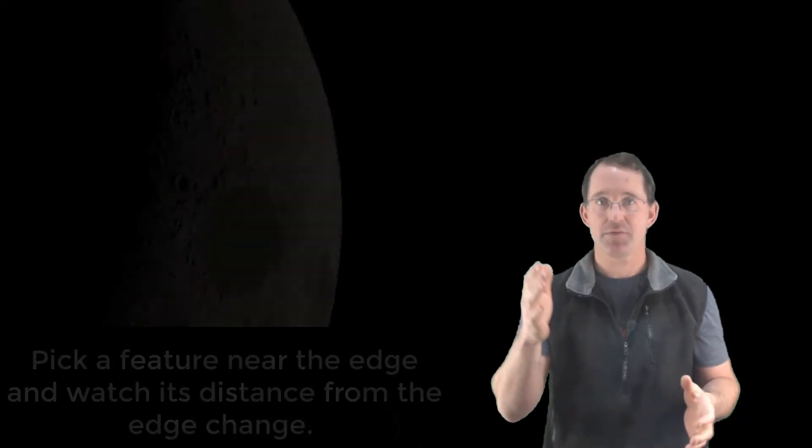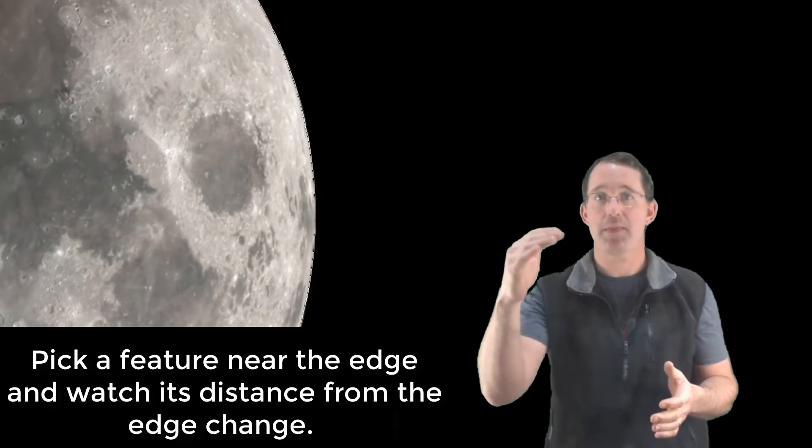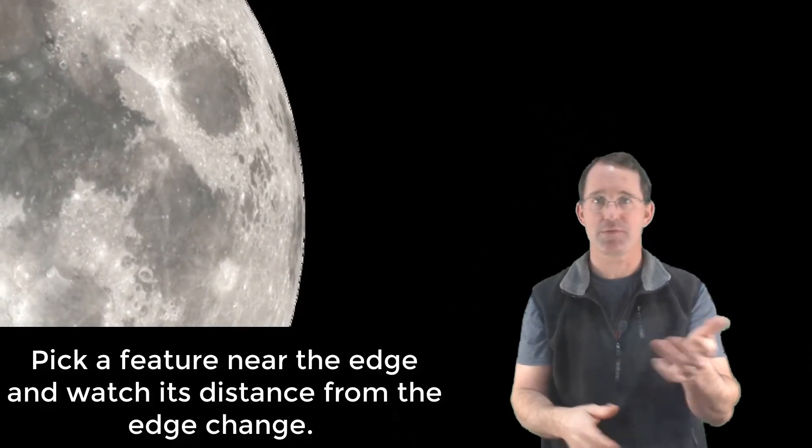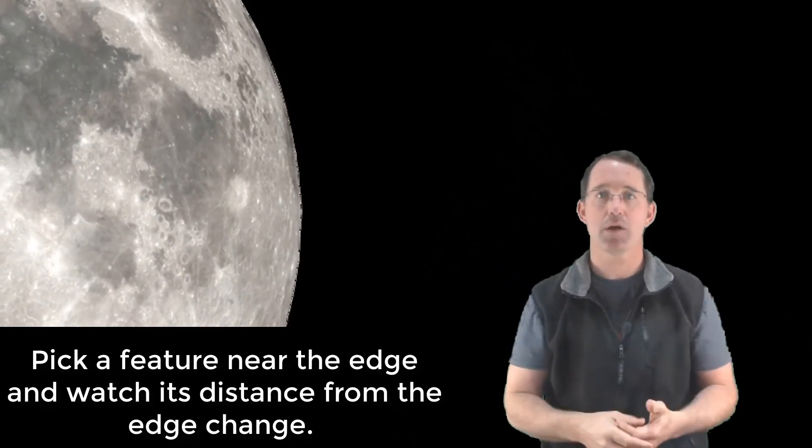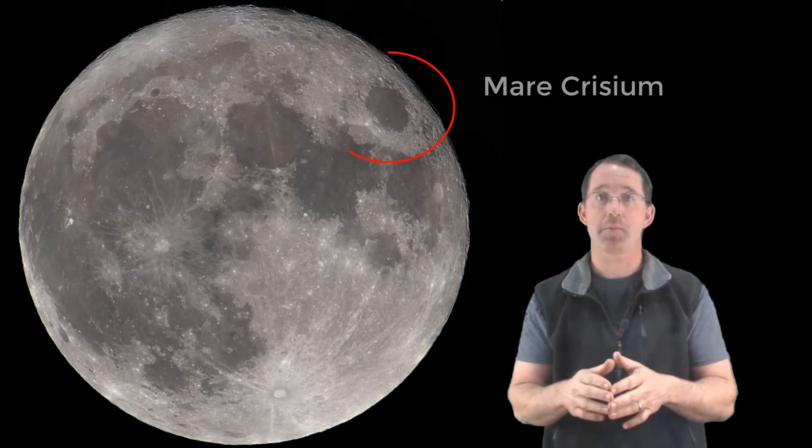If you want to watch libration for yourself, there are a couple of ways to do that. The easiest is to pick a feature relatively near the limb and watch its distance from the edge change over the course of a week or more. You can do that with the naked eye, but it'll be tough. So if you try it naked eye, pick a large feature like Mare Crisium.